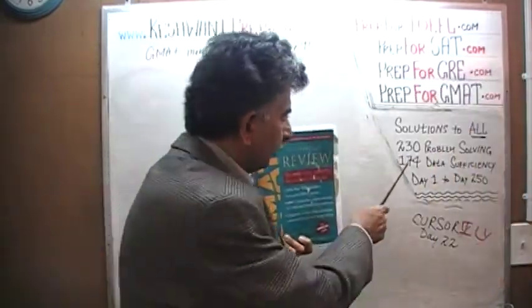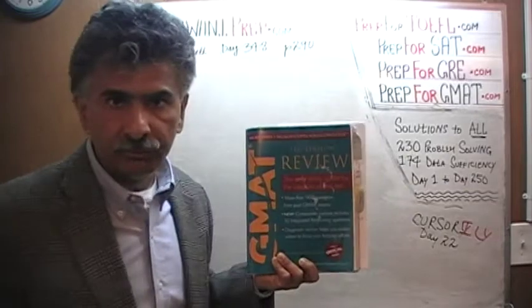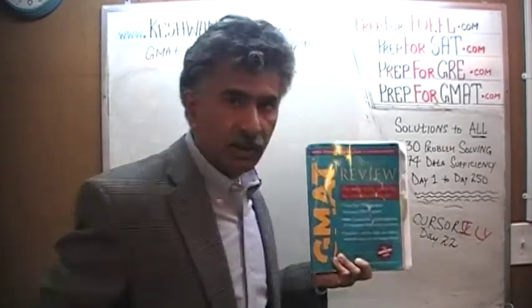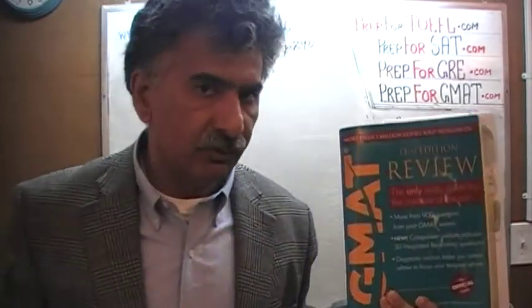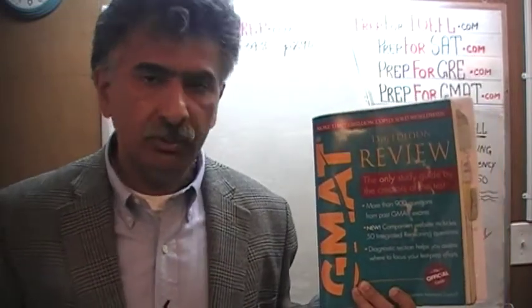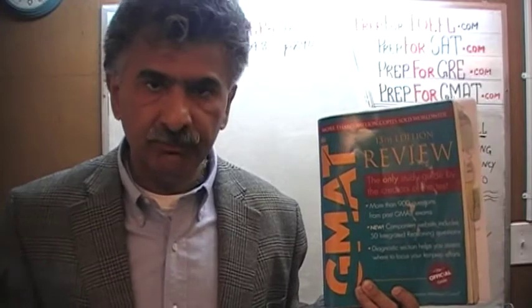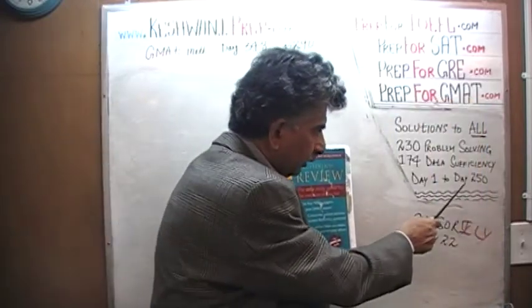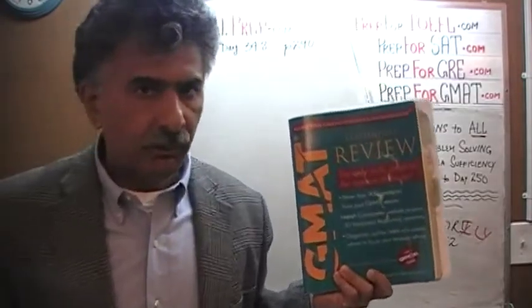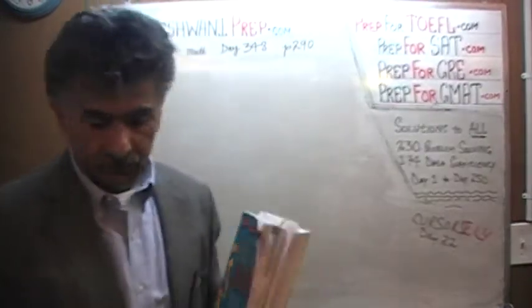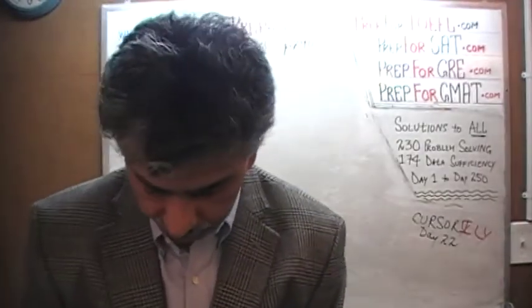The book contains 230 problem solving questions and 174 data efficiency questions. We have already solved every single math problem from this book. If you are interested in watching the original solutions to any one of these problems, you will find the original solutions from day number 1 through 250. Right now we are in the process of redoing the problems and we are on page number 290. Please turn to it.